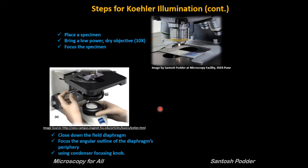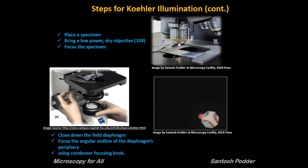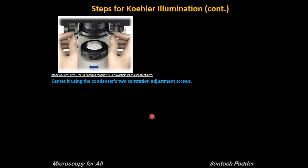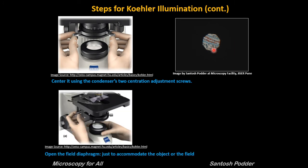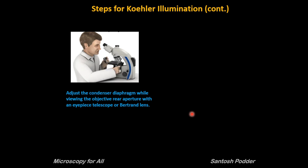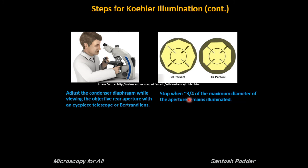Then close down the field diaphragm and try to focus the angular outline of the diaphragm periphery using the condenser focusing knob. If the condenser is not aligned with the light path, the image of the field diaphragm will appear at the periphery rather than the center — so you will need to do condenser centering. Center the condenser using its two centration adjustment screws to bring the image to the center. Then open the field diaphragm just enough to accommodate the field of view. Finally, adjust the condenser diaphragm while viewing through the objective rear aperture using a Bertrand lens or telescope lens, opening the condenser aperture to approximately three-quarters of the diameter.